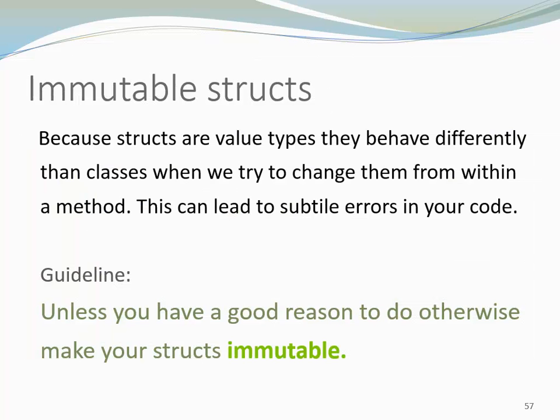Because structs are value types they behave differently than classes. This has a special implication when we try to change them from within a method. This can lead to subtle errors. It can easily happen when you refactor and when you shift functionality between methods. Here I have a guideline. Unless you have a really good reason to do otherwise, make your structs immutable.